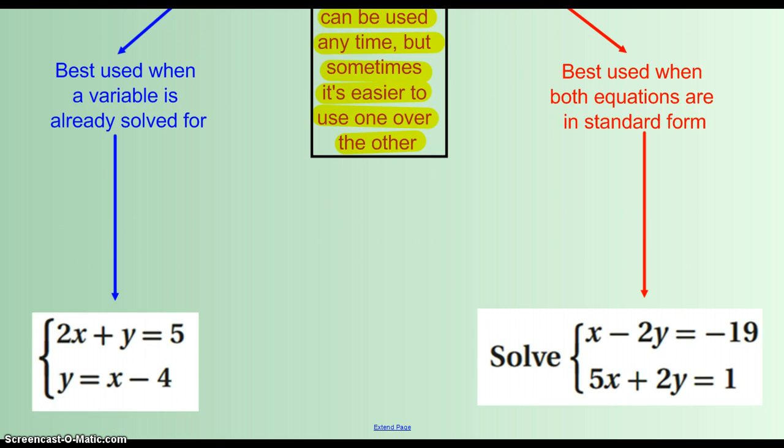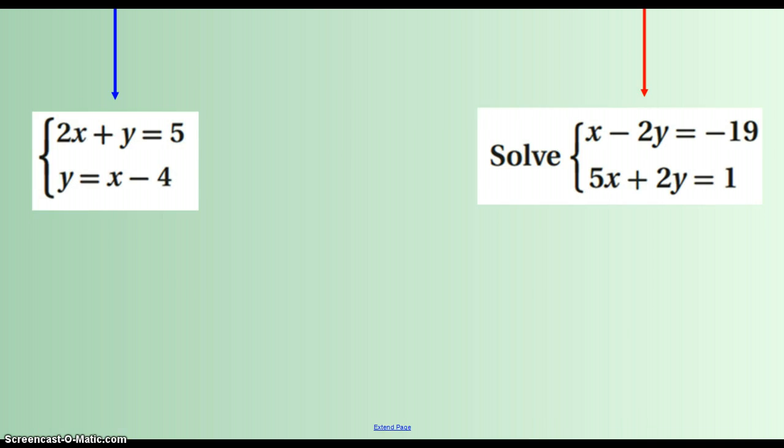So here are two examples. Notice with the system on the left here, I have a variable that is solved for. If y equals x minus 4, I can substitute this in for this y, because we're saying that in this system, this is what y equals.